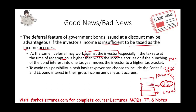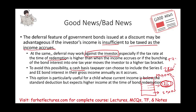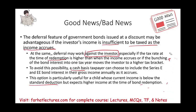To avoid this possibility, a cash basis taxpayer can choose to include the interest from these bonds in their annual income as it accrues. You would pay taxes every year — a smaller amount at a lower tax rate — rather than waiting until maturity when your rate may be higher. This option is particularly useful for children because most of their income is wiped out by the standard deduction. As you get older and earn more, you move into higher tax brackets, so paying taxes early while your rate is lower is advantageous. This is part of tax planning.